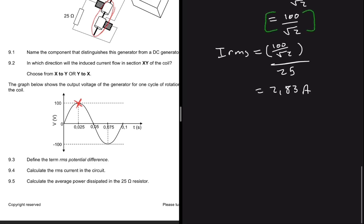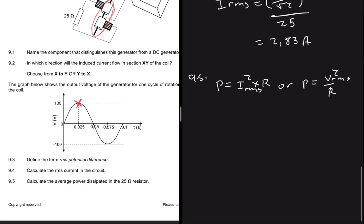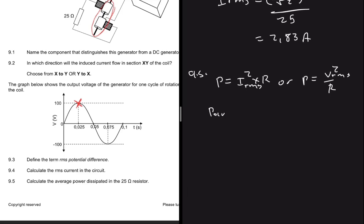Now we have question 9.5 which is calculate the average power dissipated in the 25 ohm resistor. The way you would calculate this power is very close to how you calculate power in electric circuits. We know that in electricity we have the power being equals to I squared multiplied by R or the power being equals to the voltage squared divided by the resistance. The only difference in electrodynamics is that instead of the current just being the current we use I_rms and instead of the voltage just being the voltage we use V_rms.